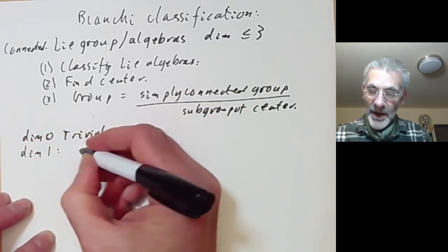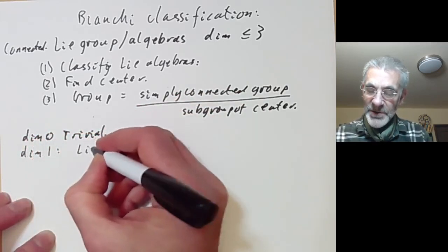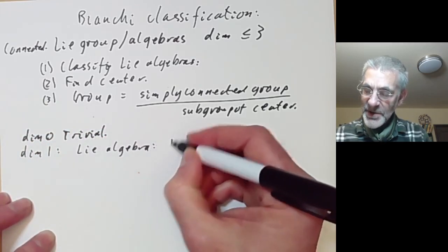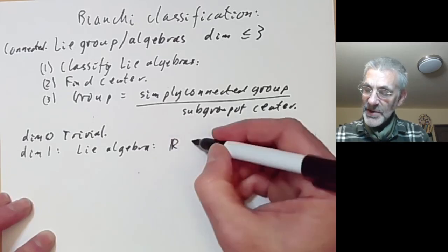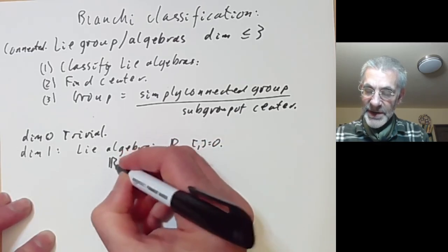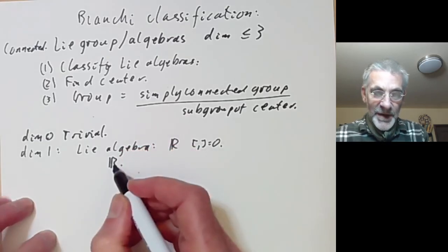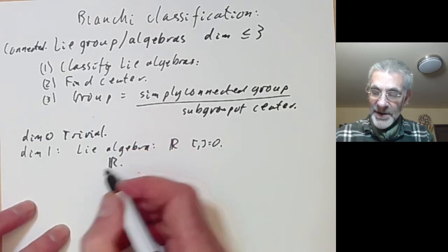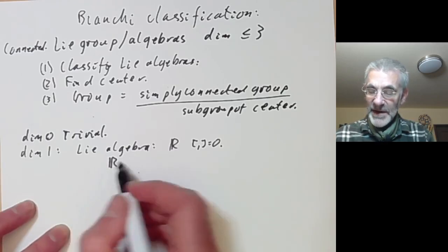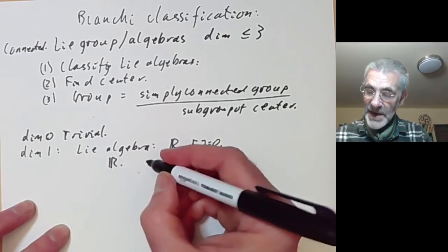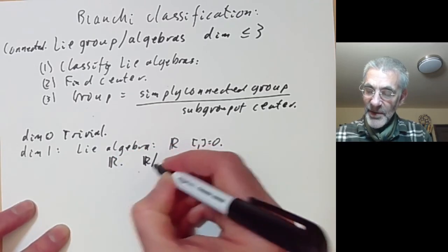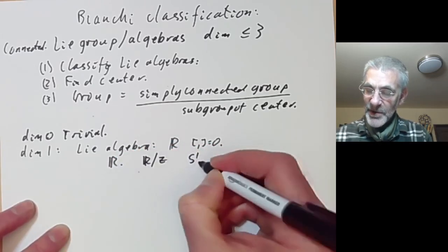In dimension 1, there's only one possible Lie algebra, which is just a one-dimensional vector space with bracket zero. The simply connected group is the real numbers under addition, and a discrete subgroup of it is either trivial or isomorphic to Z. So the only other possibility we get is R modulo Z, which is the circle group S¹.